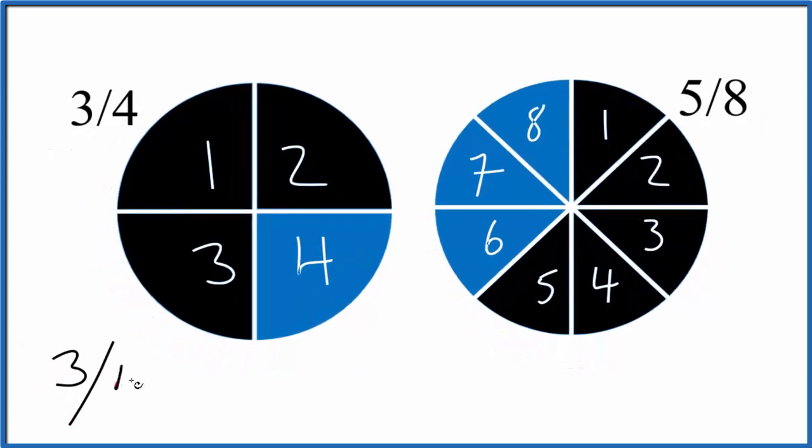So 3 divided by 4, that equals 0.75. 5 divided by 8, that equals 0.625. Let's call it 0.63.